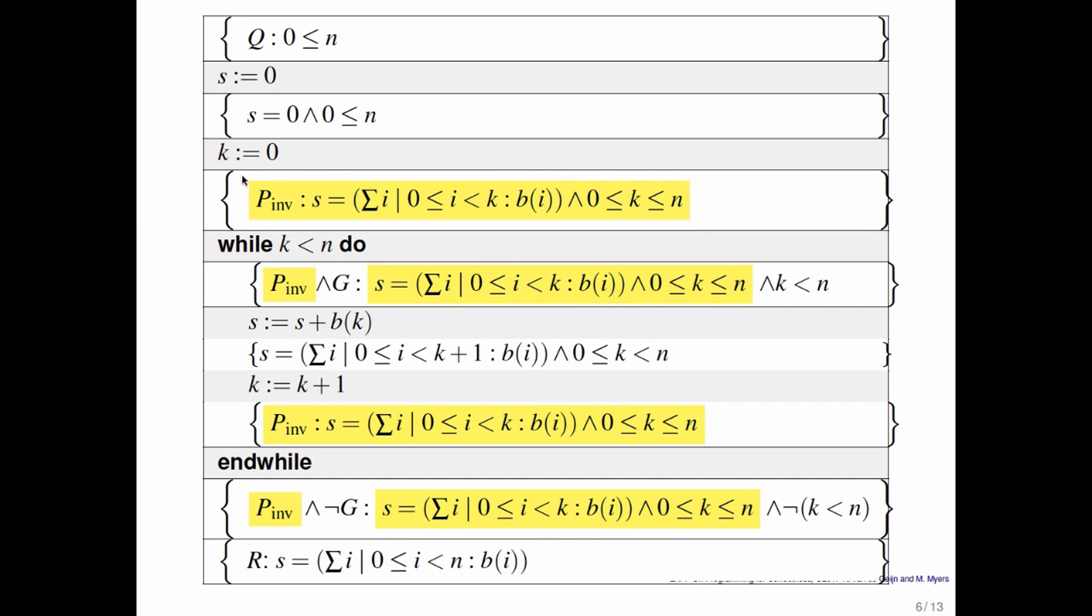Here we say exactly the same thing, except that we use mathematics to say it. Now this condition that holds before and after each iteration of the loop, and therefore holds before the loop starts, and when we come out of the loop, is called the loop invariant. And it is key to proving that a loop executes correctly.